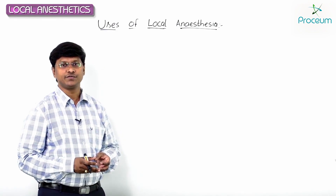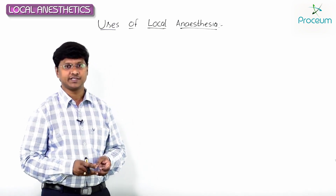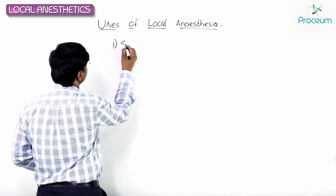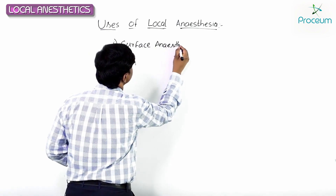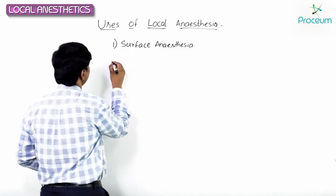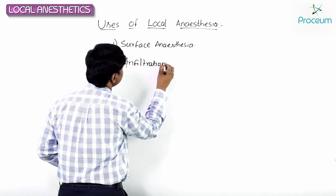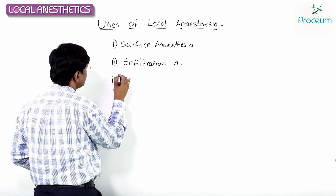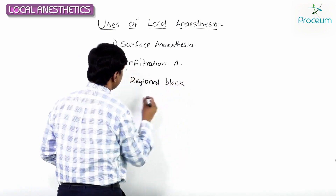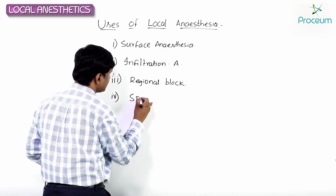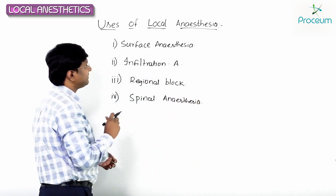Let me discuss the uses of local anesthetics. These agents can be used in the following types of anesthesia: number one, surface anesthesia; number two, infiltration anesthesia; number three, regional nerve block; and number four, spinal anesthesia. Now let me discuss each one by one.